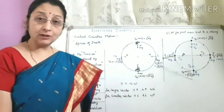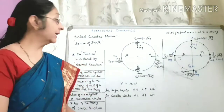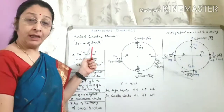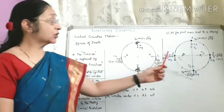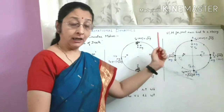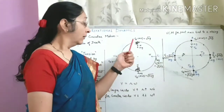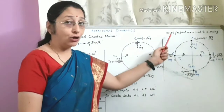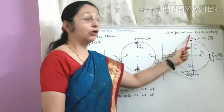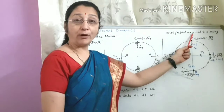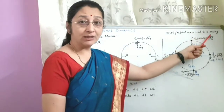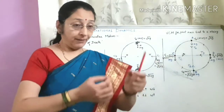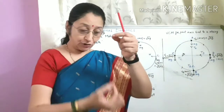Hello friends, now we will talk about the sphere of death. We will discuss the sphere of death in analogy with the vertical circular motion of a point mass tied to a string.